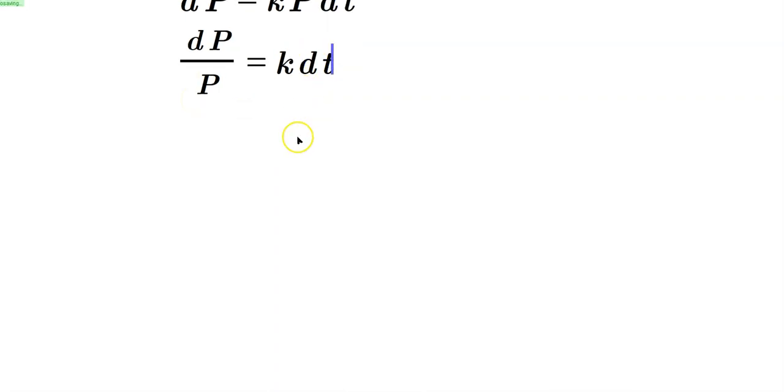Now notice dt is what we call a differential, and dP is another differential. So you need to anti-differentiate it like this: the anti-derivative of 1 over P dP, and on the right side is the anti-derivative of k dt.